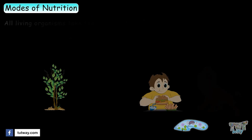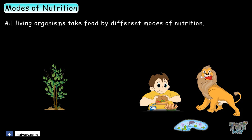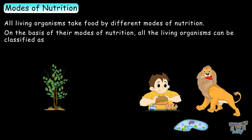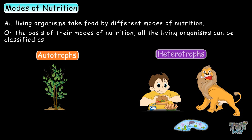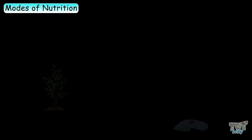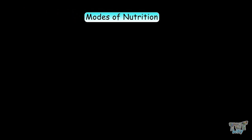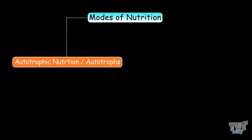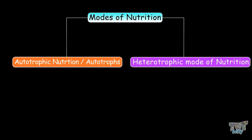All animals take food by different modes of nutrition. On the basis of their modes of nutrition, all the living organisms can be classified as autotrophs or heterotrophs. And their modes of nutrition are known as the autotrophic and heterotrophic mode of nutrition.